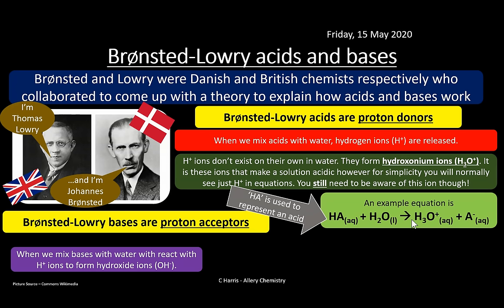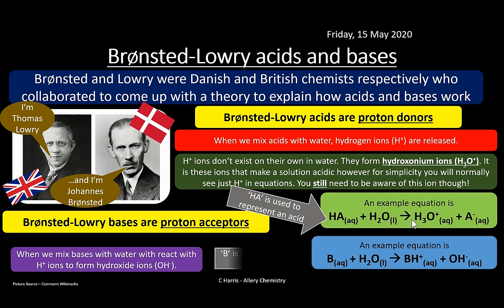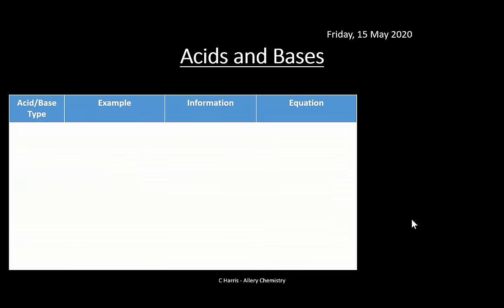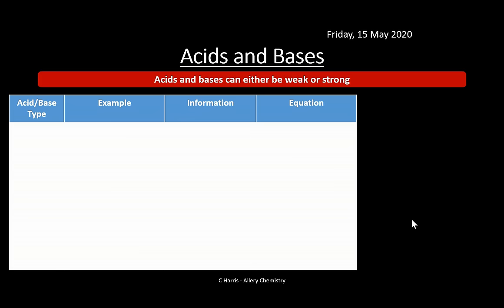When we mix bases with water, they react with H⁺ ions and form hydroxide ions - it's the OH⁻ ion that makes something basic, and H₃O⁺ is what makes something acidic. We use the letter B to represent a base; it reacts with water to form BH⁺ and OH⁻, showing how OH⁻ ions are produced. Strong bases dissociate or ionize almost completely, and weak bases dissociate poorly - likewise, strong acids ionize almost completely but weak acids dissociate poorly.